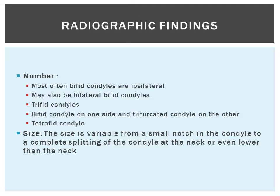Most times there is only one bifed condyle and it is unilateral, but bilateral bifed condyles are also possible. There can be trifed condyles, and there has been a case of a bifed condyle on one side and a trifurcated condyle on the other. There is also one reported case of a tetrafed condyle. The size of the radiographic finding ranges from a small notch in the condyle to a complete splitting of the condyle to the neck or even lower than the neck.